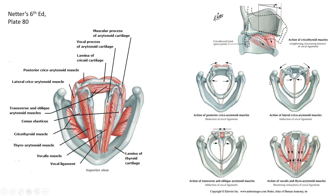An interesting view from Netter's shows the different motions within the larynx. Muscles can pull medially, causing the arytenoid cartilages to move laterally, moving the cords away from one another. The thyroid cartilage can also move anteriorly and inferiorly — shifting forward and down simultaneously. There are quite a few different motions within the larynx allowing us to talk, sing, breathe, and perform various functions.